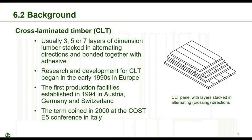Cross-laminated timber is a prefabricated engineered wood product consisting of at least three layers of solid-sawn lumber or structural composite lumber, where adjacent layers are cross-oriented and bonded with structural adhesive. It is normally provided with three, five, or seven layers, with outer layers oriented in the parallel direction for strength and stiffness. Research and development for CLT began in the early 1990s in Europe, with the first production facilities established in 1994 in Austria, Germany, and Switzerland. The term CLT was coined at the 2000 Cost E5 Conference in Italy.